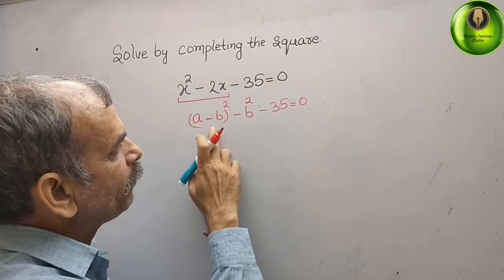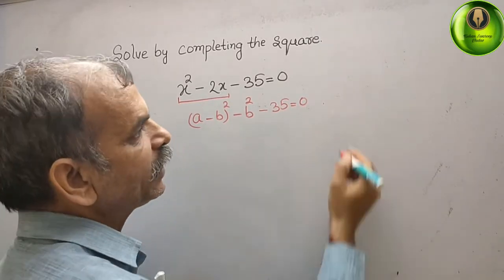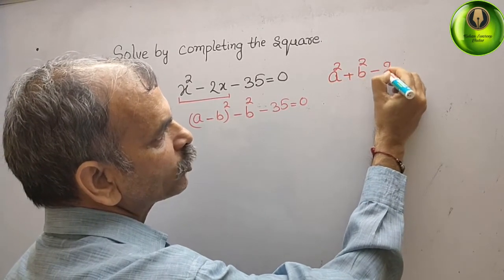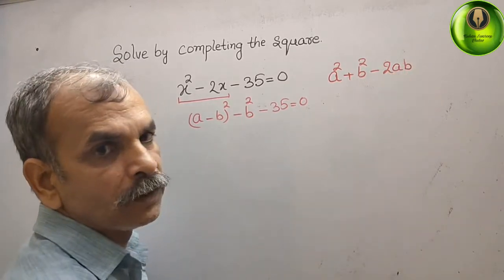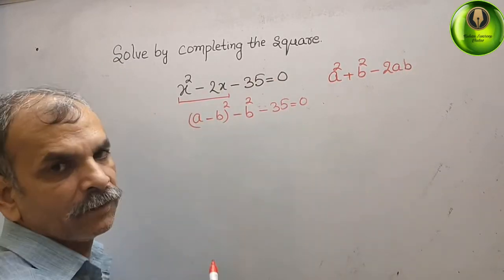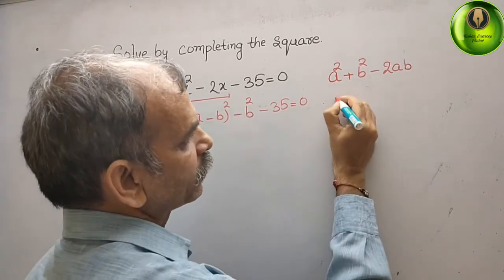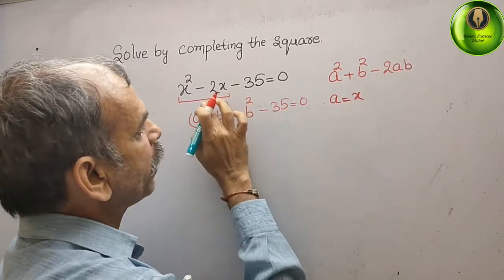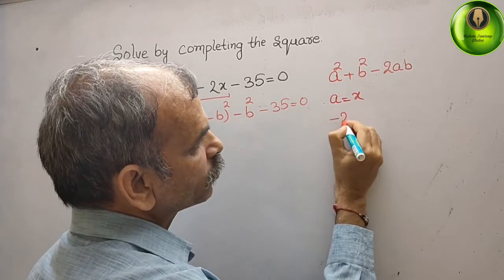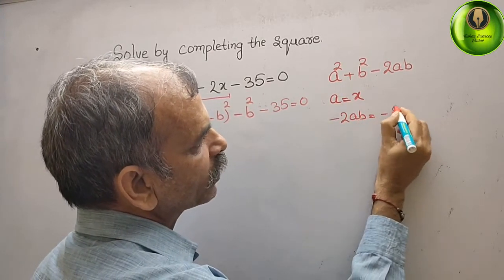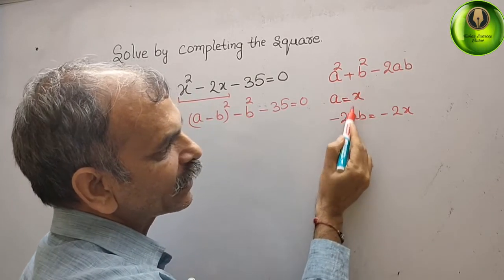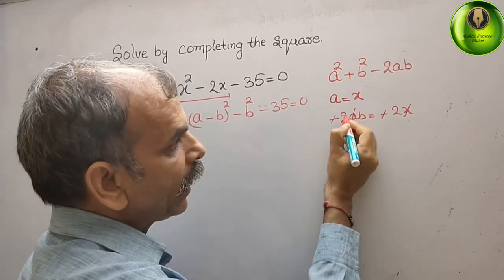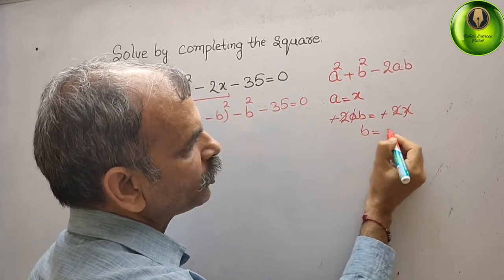First we will write a minus b whole square formula. What is that? That is your a square plus b square minus 2ab. Now compare a square with x square. We will get a is equal to x. Now compare minus 2ab with minus 2x. Minus 2ab is equal to minus 2x. We know that a is x, so now cut it. Minus and minus gone, a and a gone, and 2 and 2 gone. We will get b is equal to 1.